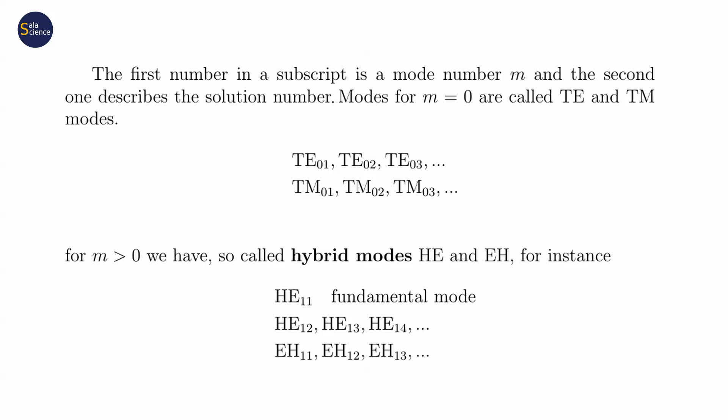If m is greater than zero, we say about hybrid modes, HE and EH. In contrast to TE and TM modes, which have only three components of the fields, hybrid modes have all six components, three electric field and three magnetic field components.